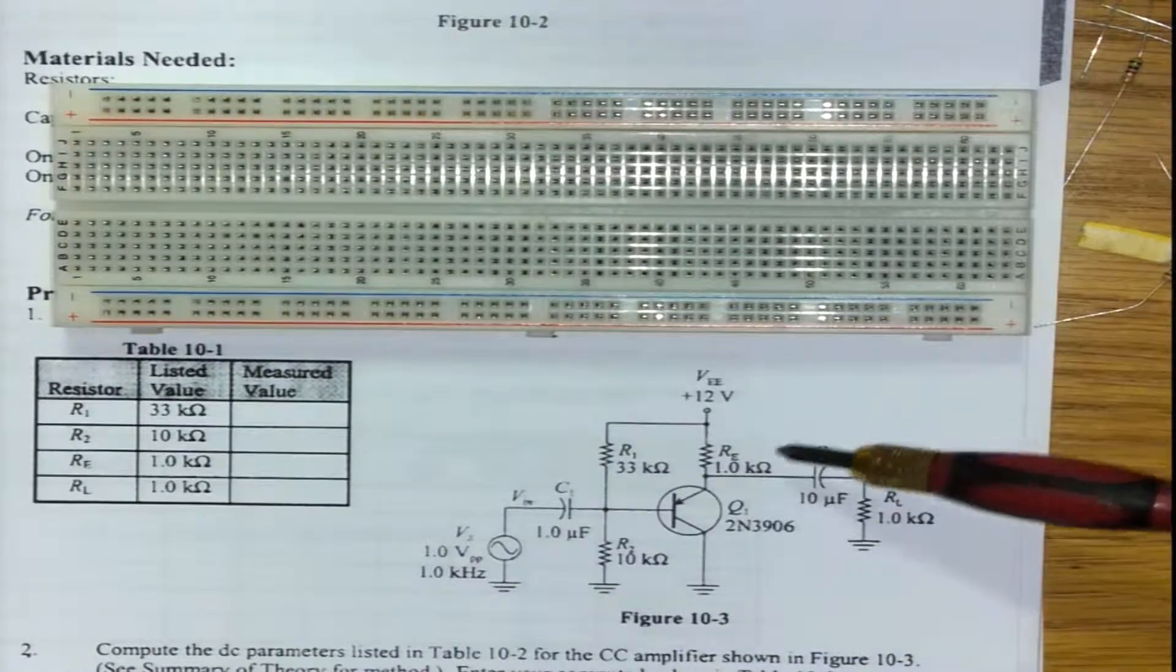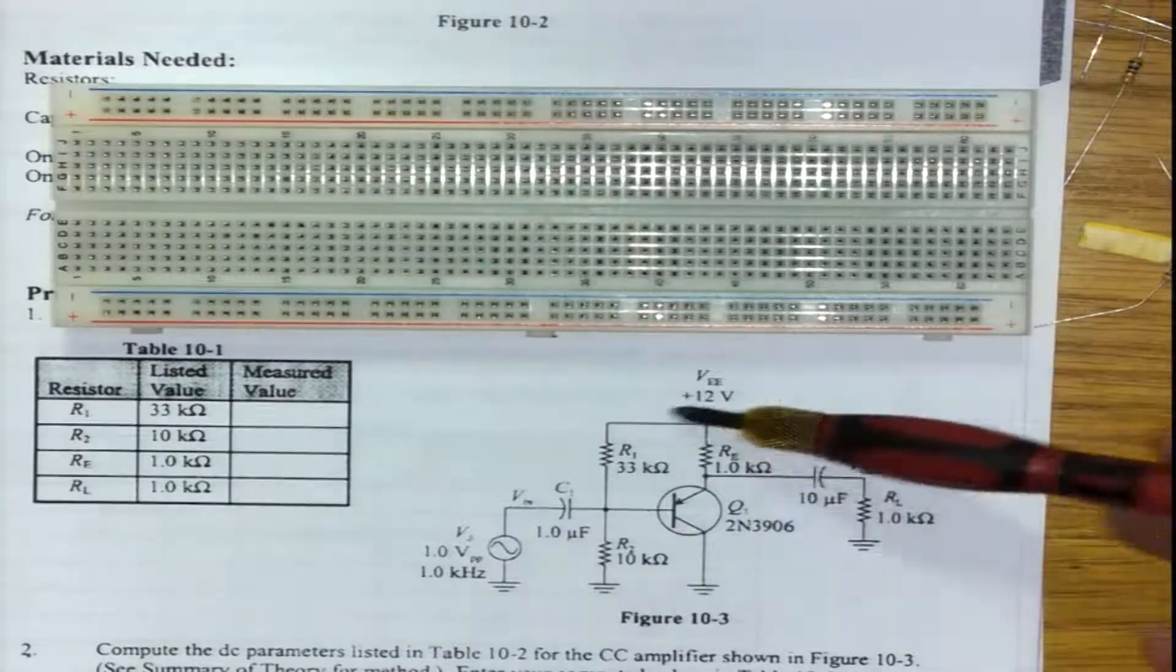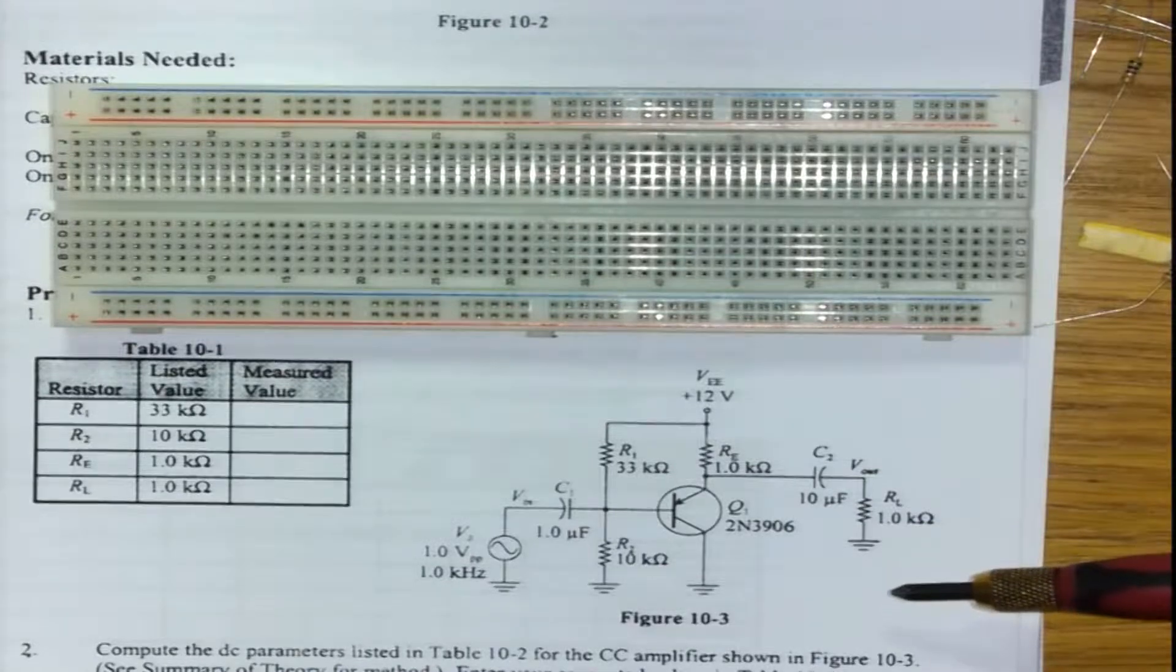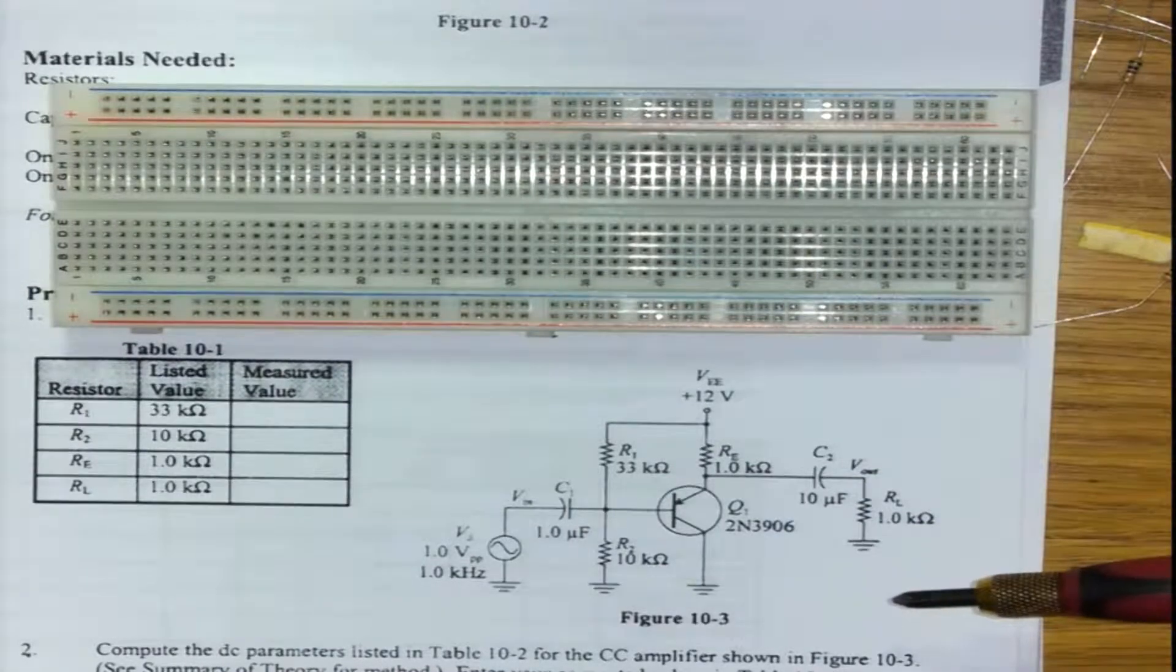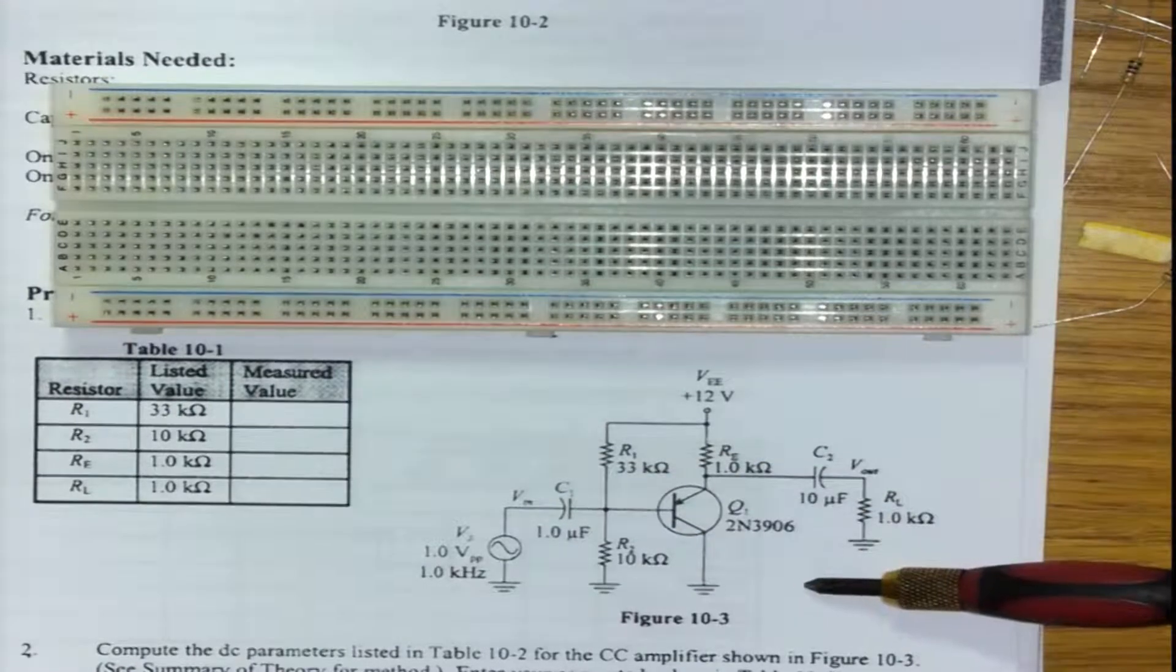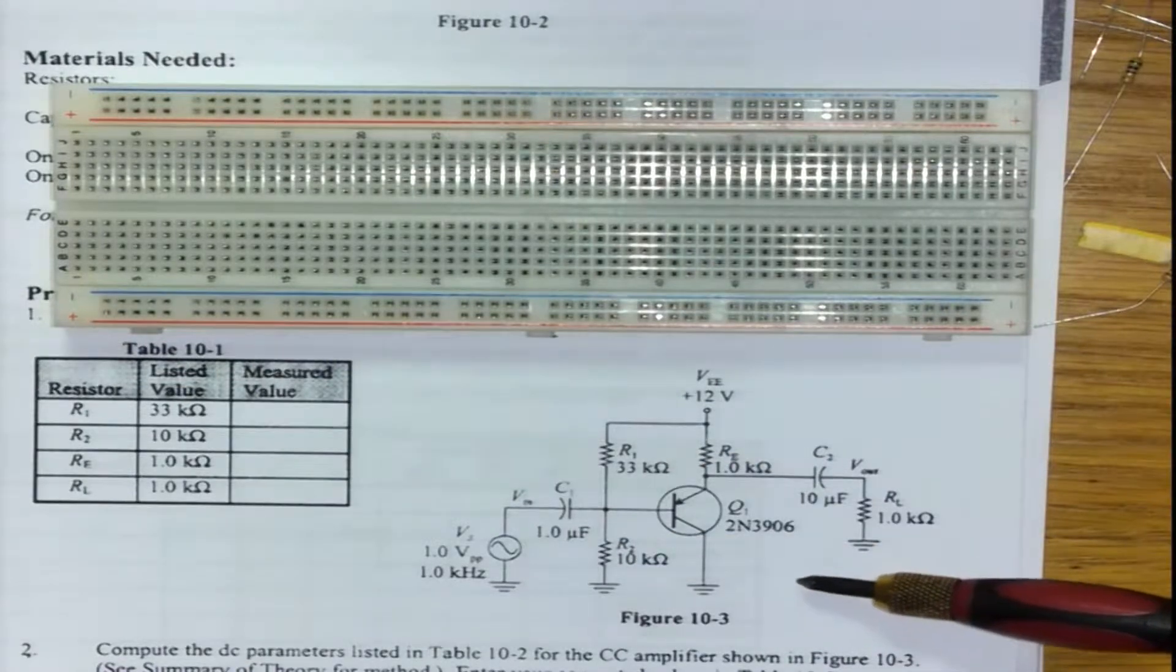In the theory class the common collector amplifier can be either PNP or NPN circuit. Depending on the orientation of your transistor, your circuit components will be handled in a specific way. For us, the main thing is we've got a circuit for the practical, we've got a breadboard, and we're going to follow the procedure and construct the circuit.